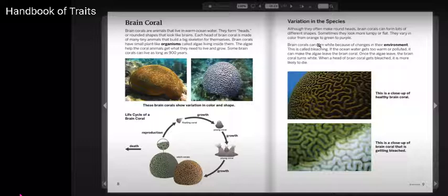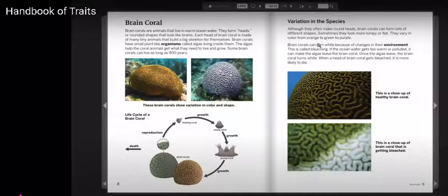Each head of brain coral is made of many tiny animals that build a big skeleton for themselves. Brain corals have small, plant-like organisms called algae living inside them. The algae help the coral animals get what they need to live and grow.